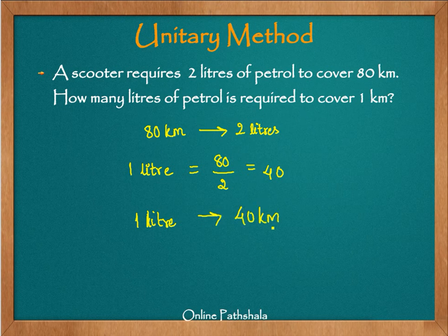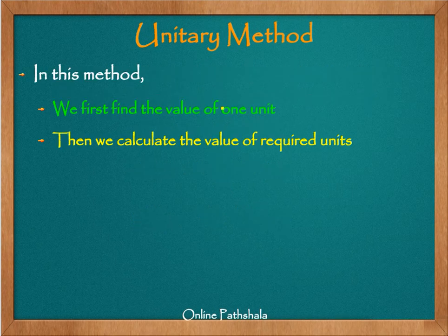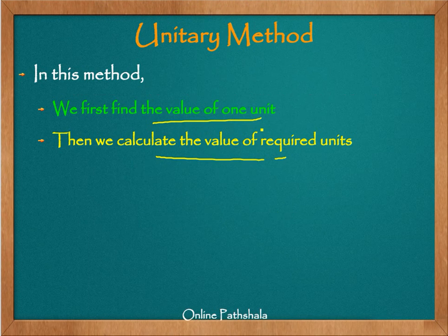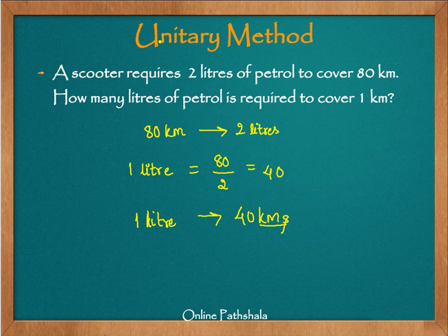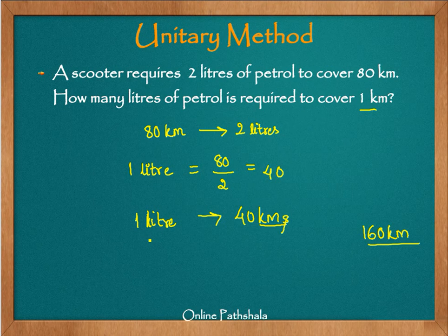This is essentially what the unitary method is — we find the value of one unit and then use that value to find the value of other units. For example, if you want to cover 160 kilometers, you need to know the distance covered by one liter. We found that one liter gives 40 kilometers, so for 160 kilometers you will need 4 liters of petrol.